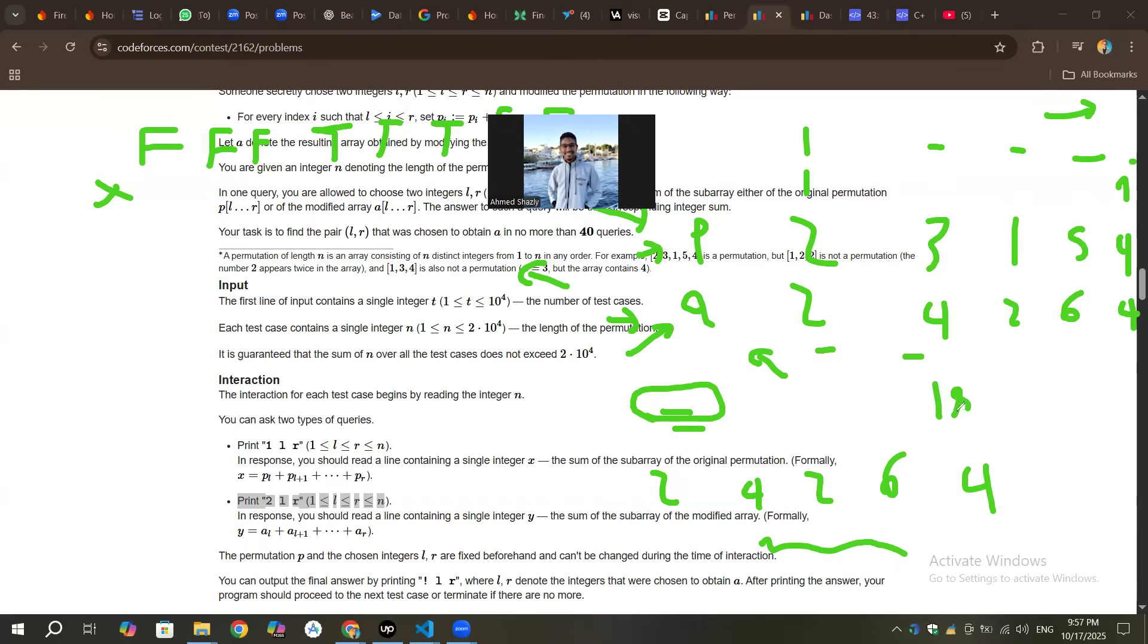So it would be just 18 minus 2 plus 3, 5, 10, 11, 15. That will give you 3, which is the number of elements you have increased, like R minus L plus 1, right?